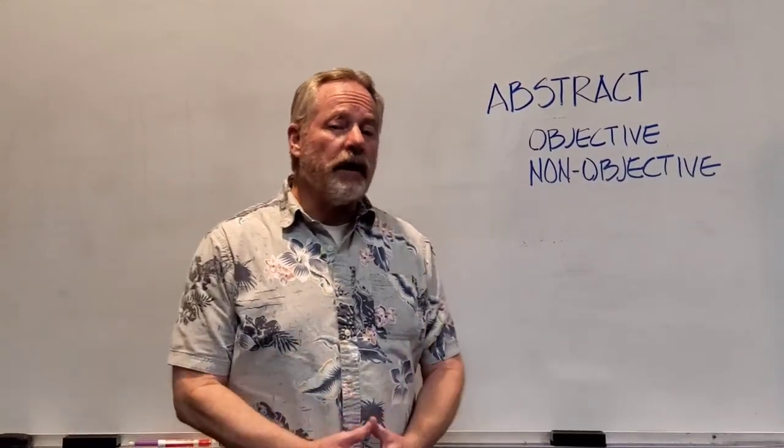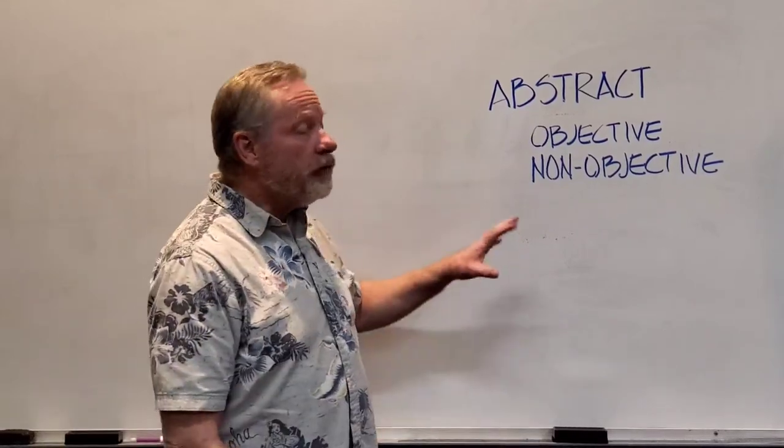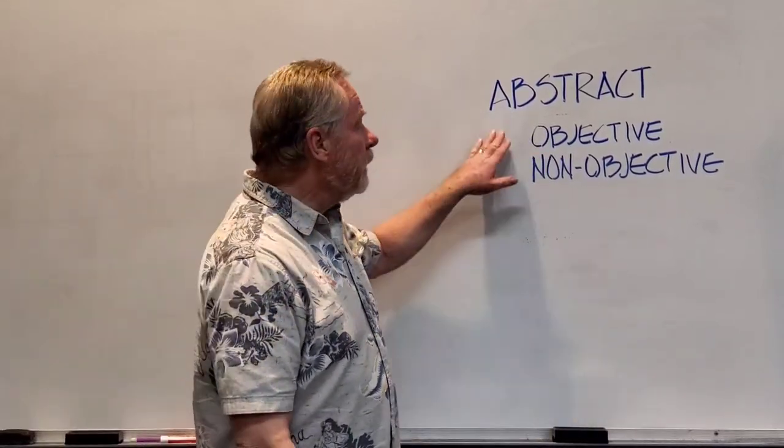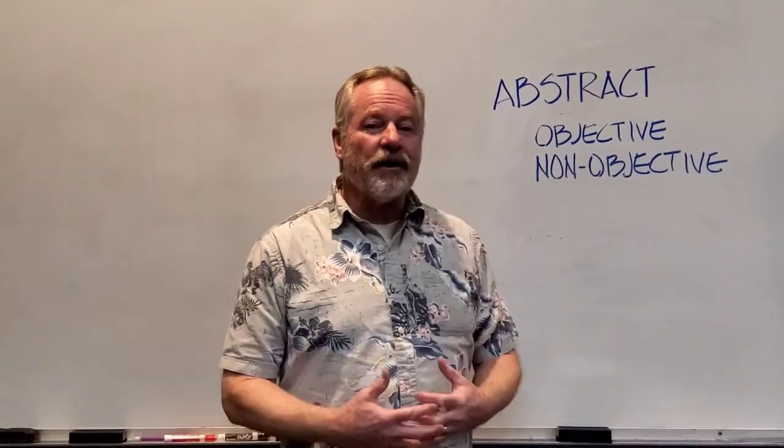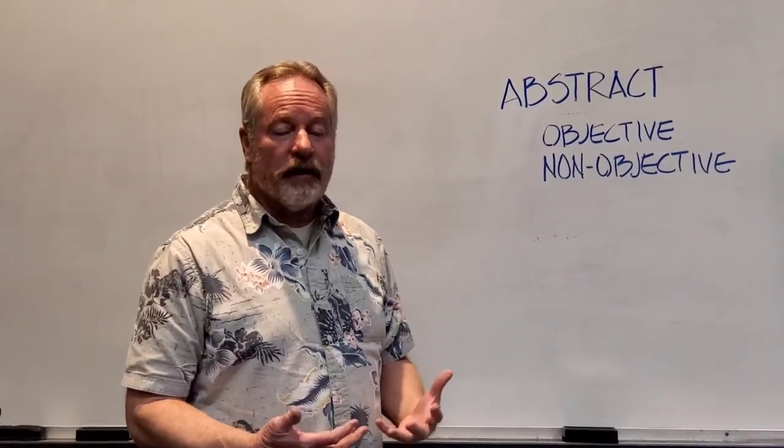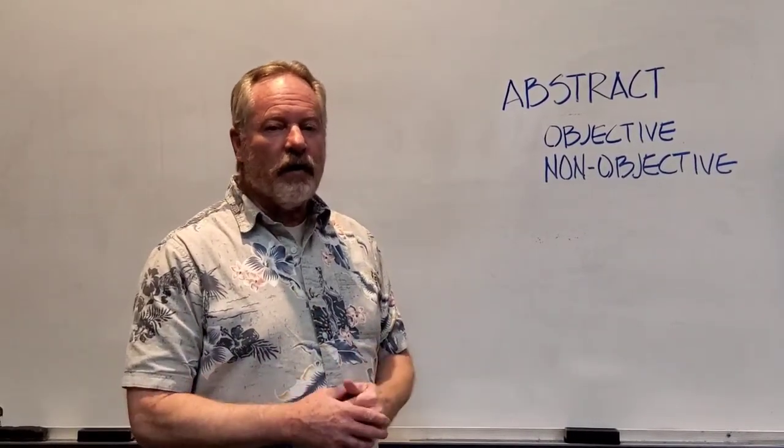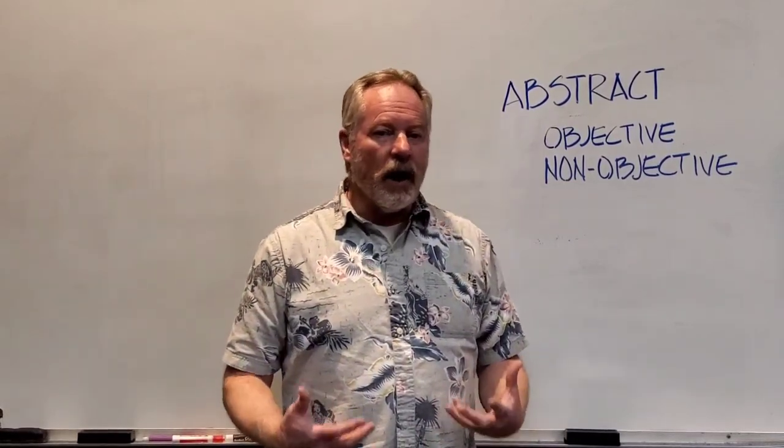Painting class. Your third project is an abstract painting. Now there's two types of abstract: objective and non-objective. Objective simply means that there was an object that you started with. It may be hard to recognize by the time the piece is finished, but there's an object involved. Non-objective is simply a design. There's no object there.